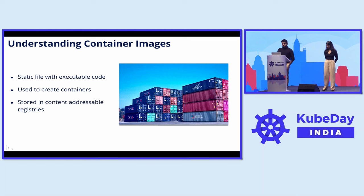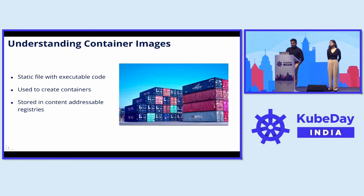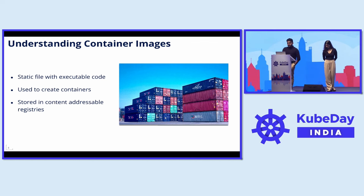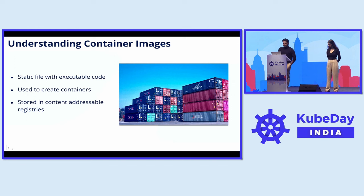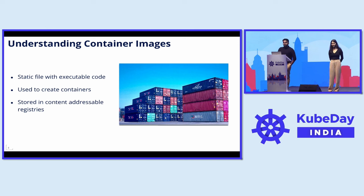Let's start with the software part of the software supply chain. A container image is basically a standard way of packaging the executable code along with all of its dependencies in a way that can easily be shared across users. In terms of Kubernetes, a container image is the basic unit that can be used to run your code inside of a cluster. For example, if you want to run your binary inside a cluster, you can create an image, run a pod, and expose it. You can create a Kubernetes service and expose it to users using HTTPS.